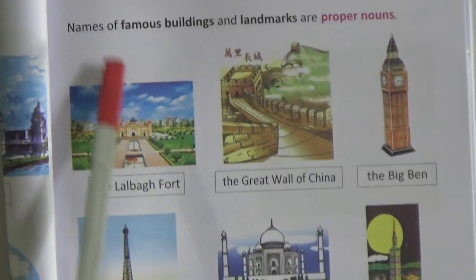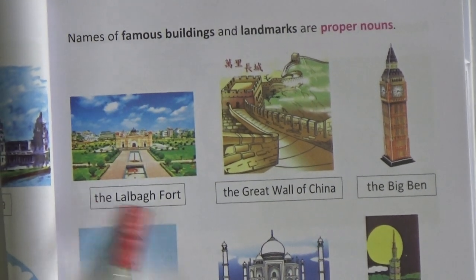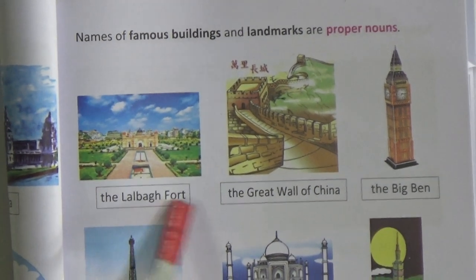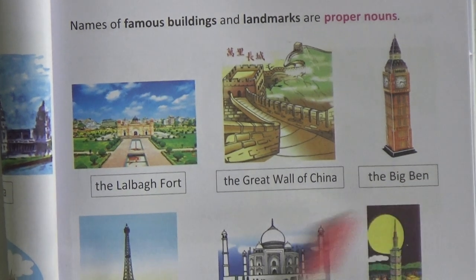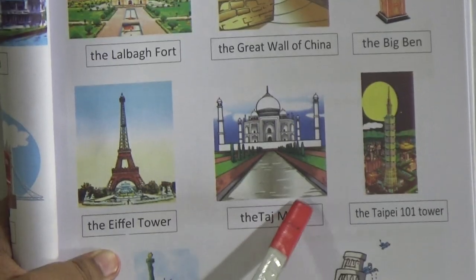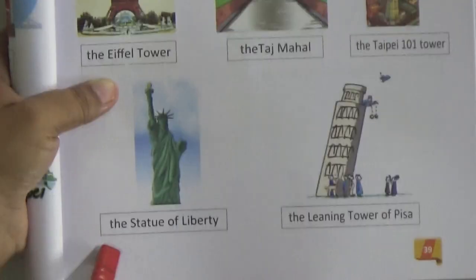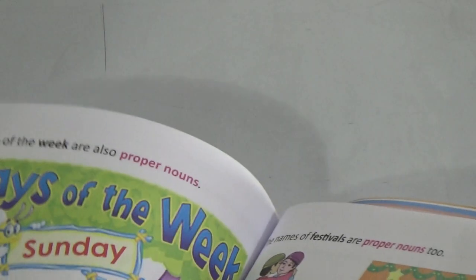Now, the famous buildings and landmarks — the Lalbagh Fort, the Great Wall of China, the Big Ben, the Eiffel Tower, the Taj Mahal, the Taipei 101 Tower, the Statue of Liberty, the Leaning Tower of Pisa. Students, that means all these are also the naming words.